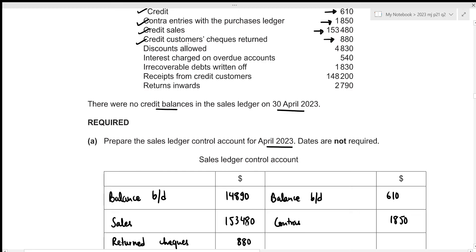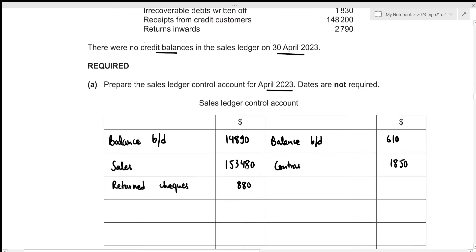Returned cheques increase the amount we are yet to receive from our credit customers, so this should also be recorded on the debit side under the heading of returned cheques, at 880. Discounts allowed is given as 4,830 — discounts allowed decreases the amount we are yet to receive from our credit customers, so this should be written on the credit side as discounts allowed, 4,830.